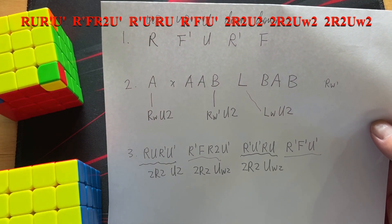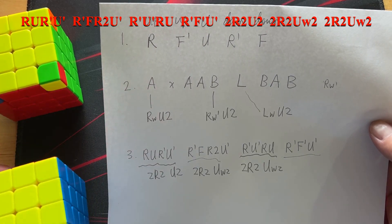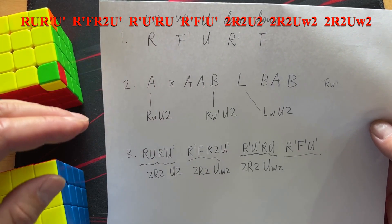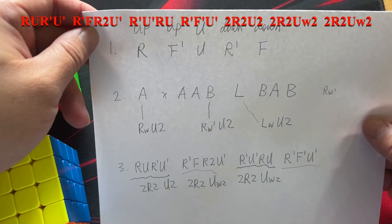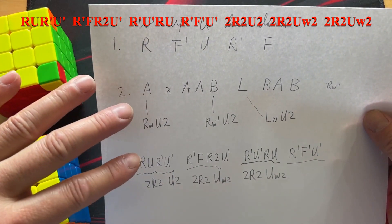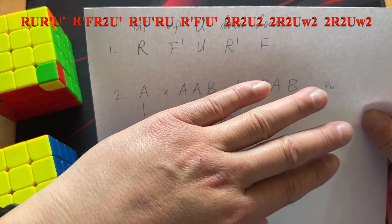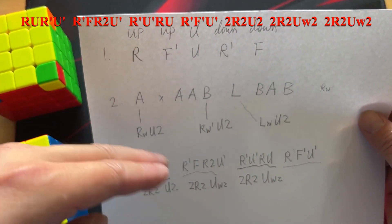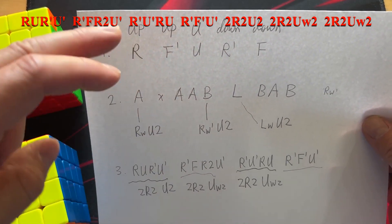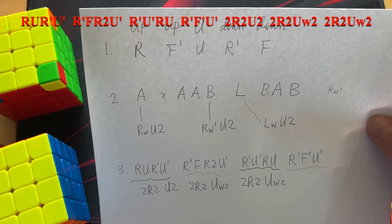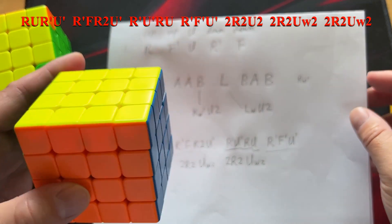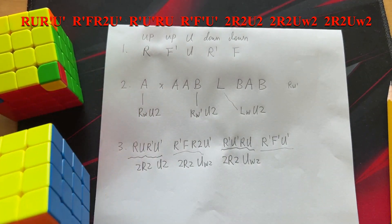If you already know how to solve 3x3, these are just the special cases for 4x4. If you don't have parity, you don't really need some of these, but sometimes you will have parity — so you need to remember all of these in order to solve the 4x4. Thank you so much.